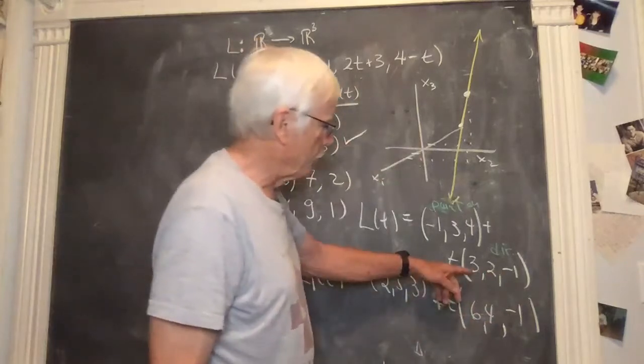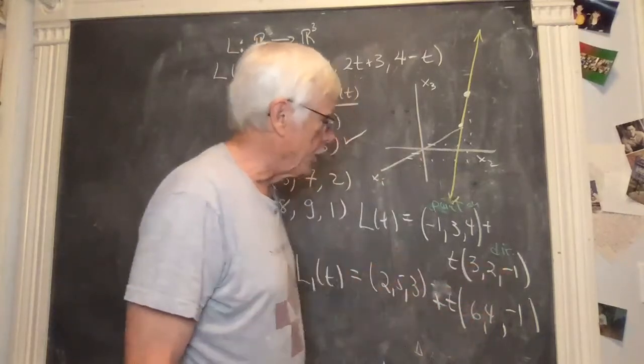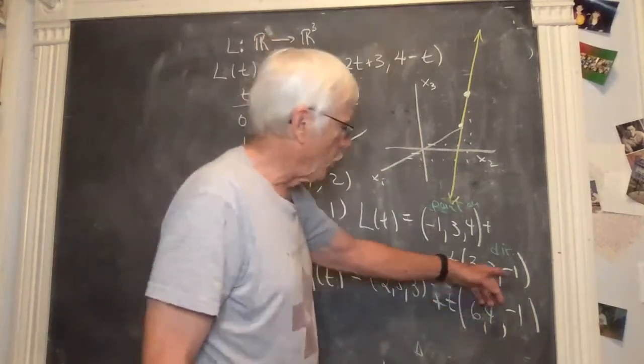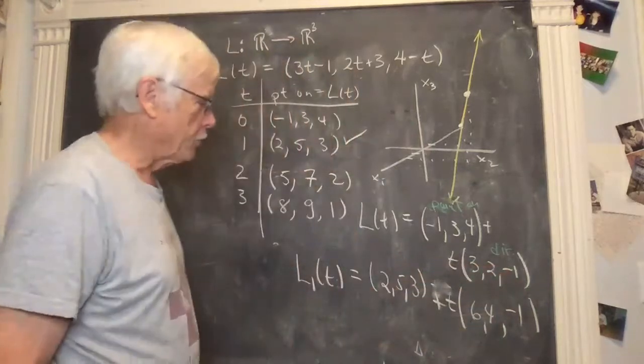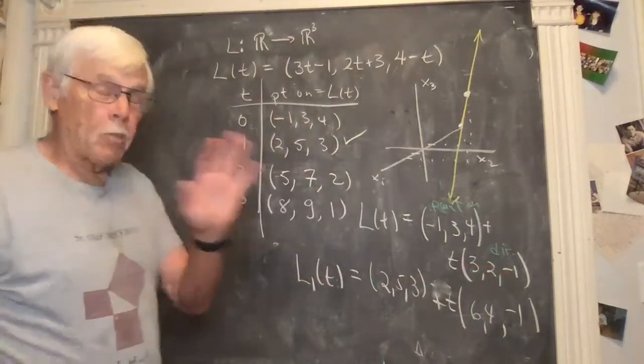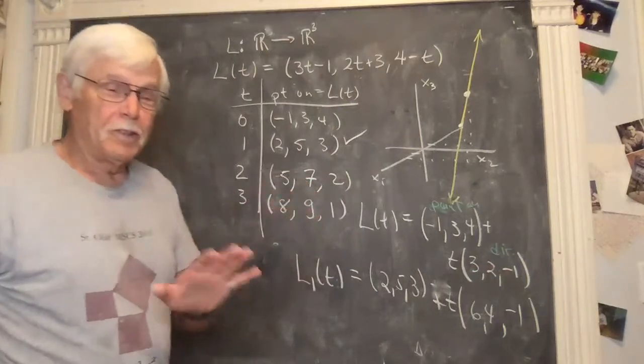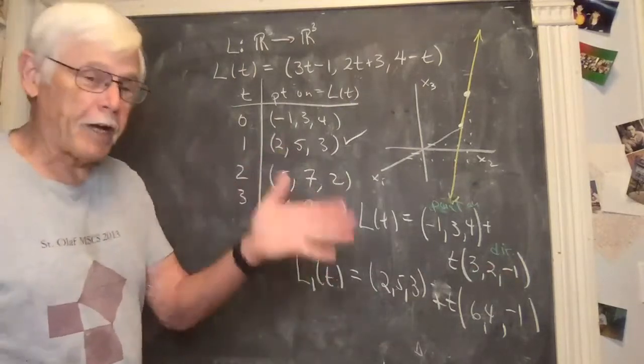Or I could have done minus three, minus two, one, or thirty, twenty, minus ten. Lots of different choices, but not arbitrary choices. They're different because they're different vectors. Direction is a vector, different vectors.